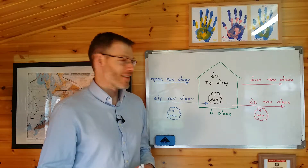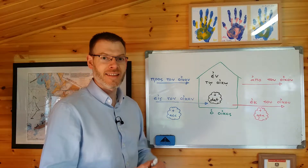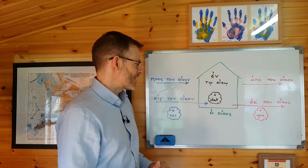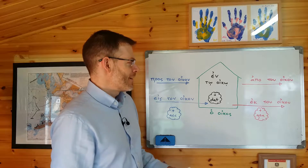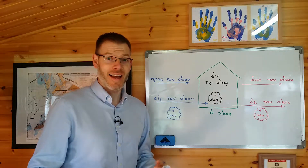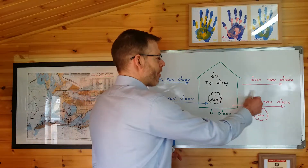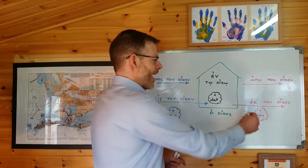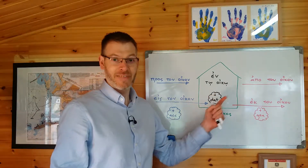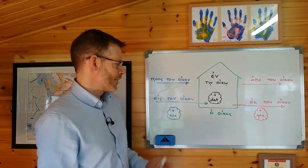En is said to govern a noun in the dative. So if you want to say something or somebody is in the house, it's en to oiko, because that's the dative form of ho oikos. And thirdly, apo and ek are said to govern a noun in the genitive. So apo tou oikou, ek tou oikou — 'from the house' in the sense of 'away from,' or 'out of the house,' ek tou oikou.